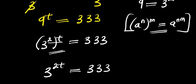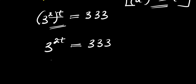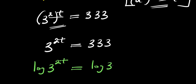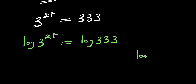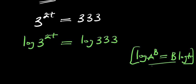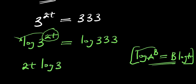From here we introduce logarithms to solve for t. We take the log of both sides: log(3^(2t)) = log(333). Applying the identity log(a^b) = b·log(a), the exponent 2t comes in front, giving 2t · log(3) = log(333).